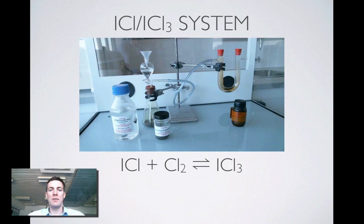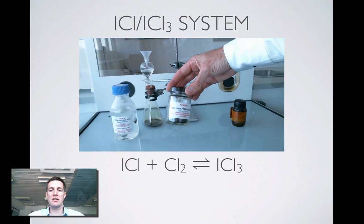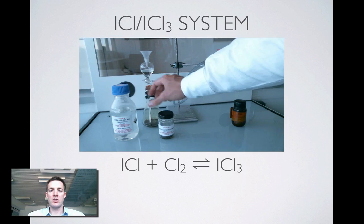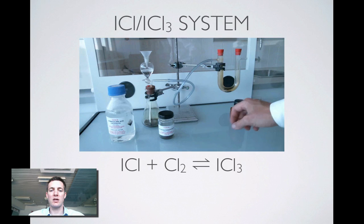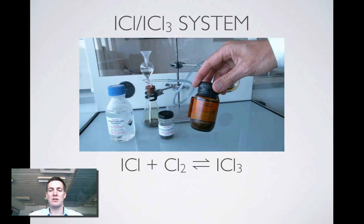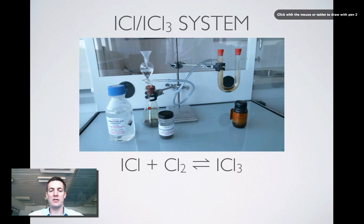We're going to start off with one which I quite like actually. It's the ICL, so iodine monochloride and ICL3 system. I'm just showing you the chemicals that we're using here to make the chlorine in this left hand flask. So the chlorine is going to come from the left hand side. It's going to react with iodine on the right hand side to produce ICL.